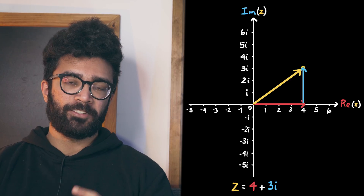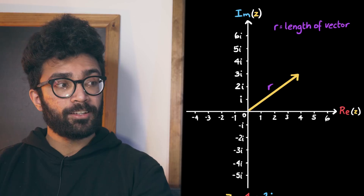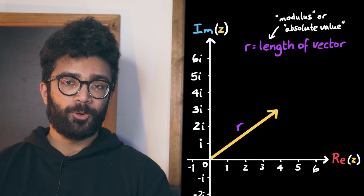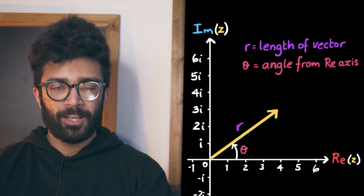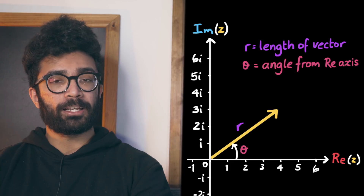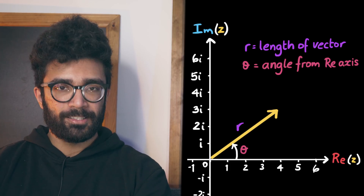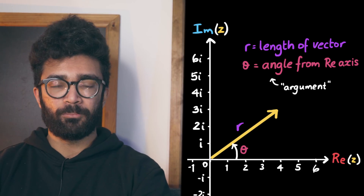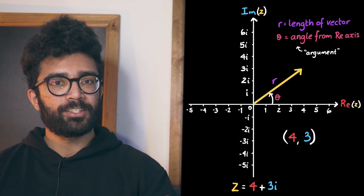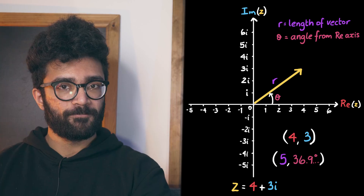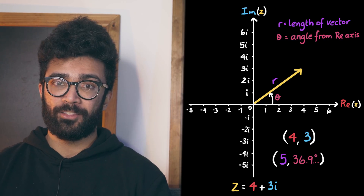Now, each complex number obviously has its real and imaginary parts, but it can also be described using two different pieces of information. First, we can use the length of the vector drawn here — we call this the modulus, or absolute value, of the complex number, easily found using Pythagoras' theorem. The other important defining quantity is an angle: normally the angle between the real axis and the complex number vector, measured in the anticlockwise direction. This angle, usually labeled theta, is called the argument of the complex number.